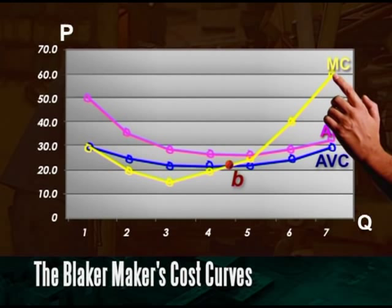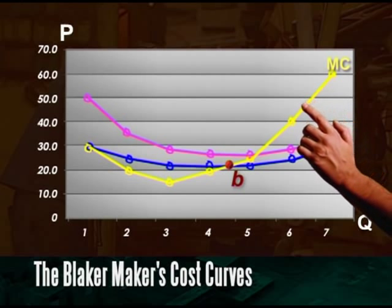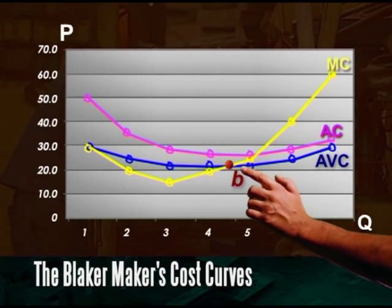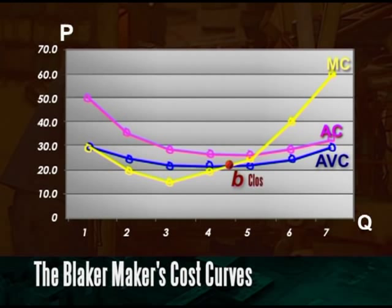Blakermacher's supply curve is that part of the marginal cost curve that lies above the average variable cost curve. It starts at point B where average variable cost is at its minimum. This is the close down point for Blakermacher. Blakermacher will close down if the price falls below this to a point such as point A.